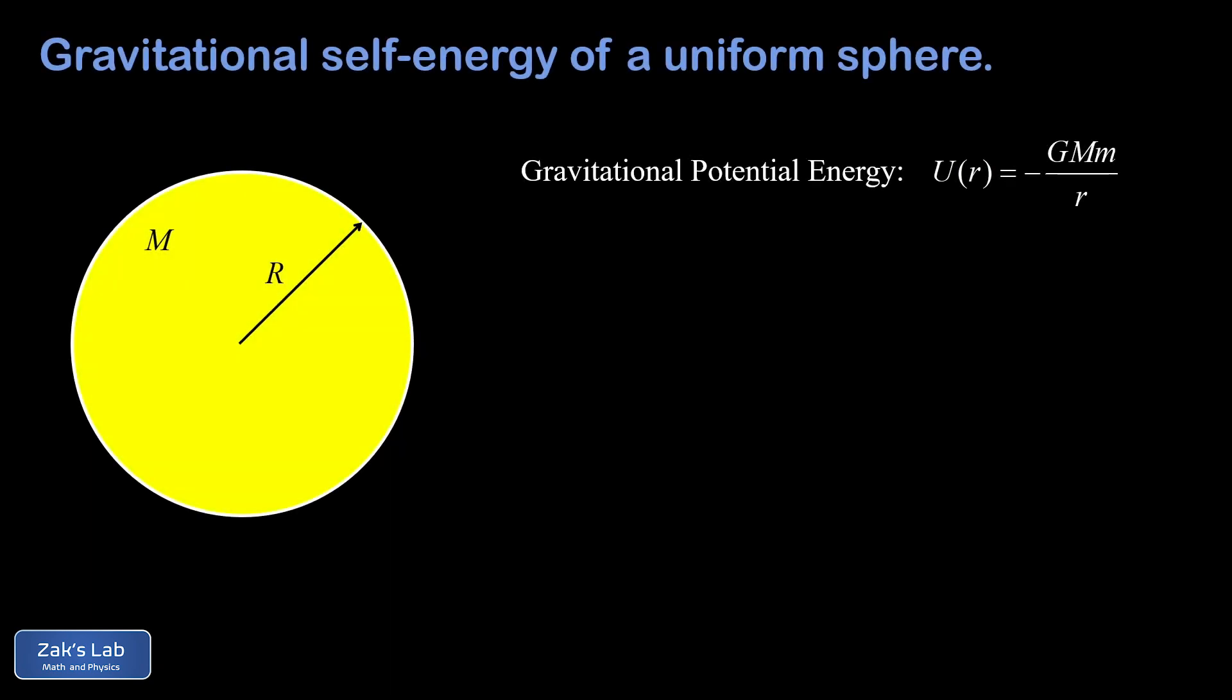In this video we're computing the gravitational self-energy of a uniform sphere with mass M and radius R. The idea that an isolated sphere contains some kind of gravitational energy sounds a little strange at first, but here's the basic reasoning behind it.